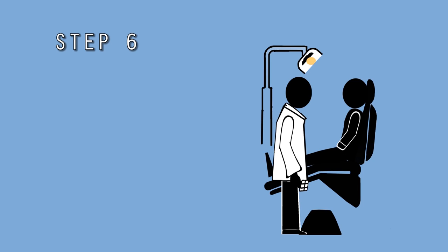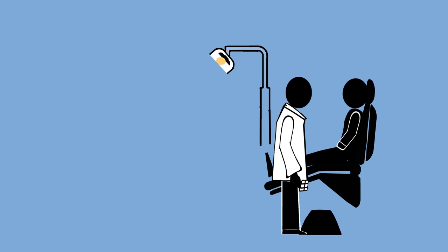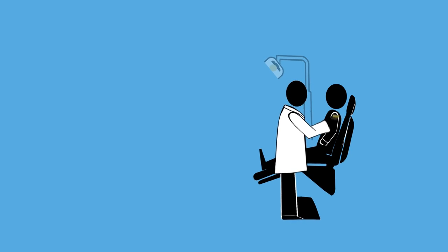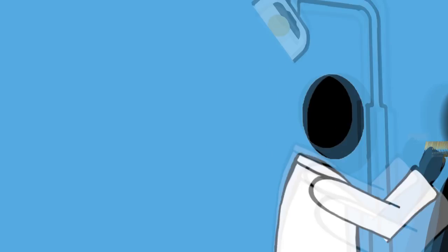Step 6. Use indirect light for shade selection and turn off the unit's light. Using natural sunlight by shade selecting near a window is ideal. Step 7. Fan the Shade Guide in front of the patient's teeth in an edge-to-edge alignment with the natural teeth.